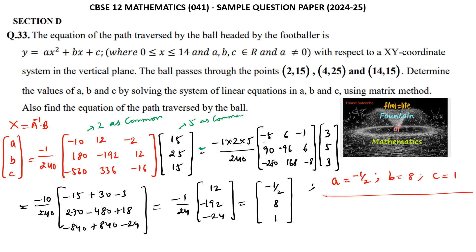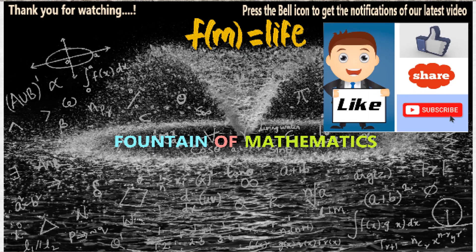Therefore, a = −1/2, b = 8, and c = 1. Hence the parabolic path traversed by the footballer is y = −(1/2)x² + 8x + 1.